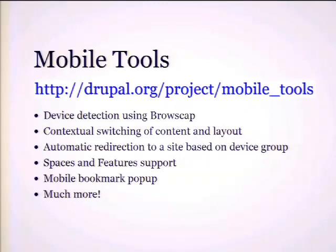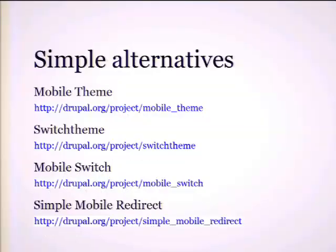But Mobile Tools is pretty complicated, and Acquia Insights shows it's not the best module to use — if it's installed, it could give you minus 10 scores because of caching problems. You can use simpler alternatives like Mobile Theme, Switch Theme, and Mobile Switch, combined with the simple Mobile Redirect module. The caching problem is that if you have a single website with the same URL for different devices and lots of visitors, you can't cache the content, because different device groups have different content, blocks, CSS, and other stuff.